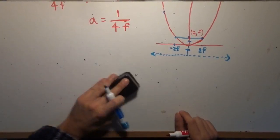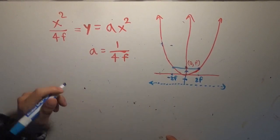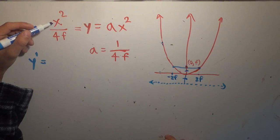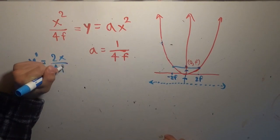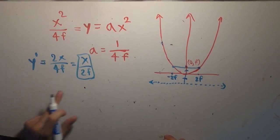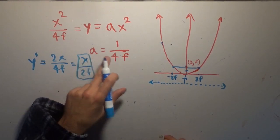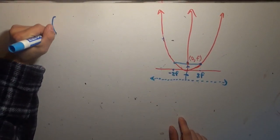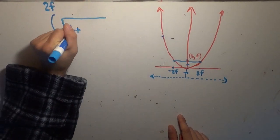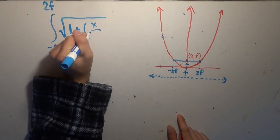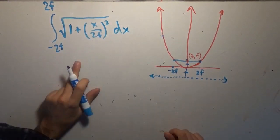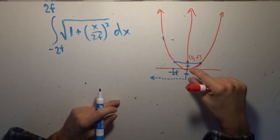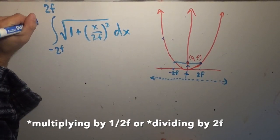Our function is y equals x squared over 4f, and its derivative y prime is 2x over 4f, which simplifies to x over 2f. So the arc length from negative 2f to 2f is the integral from negative 2f to 2f of the square root of 1 plus (x over 2f) squared, dx. And remember, we're dividing by the focal parameter 2f, so we multiply by 1 over 2f. You can already see there are several 2f's that will cancel nicely.